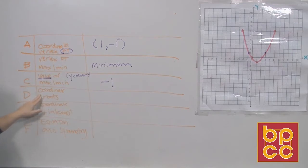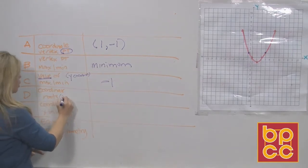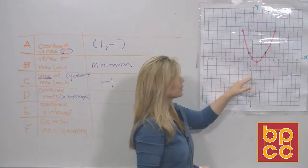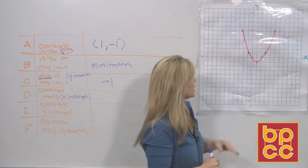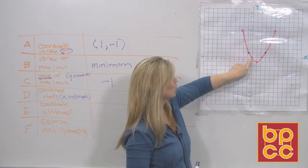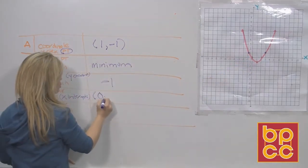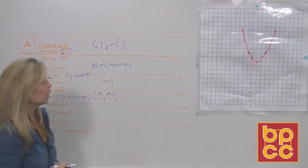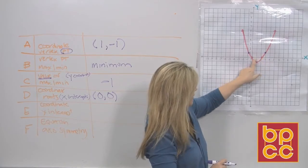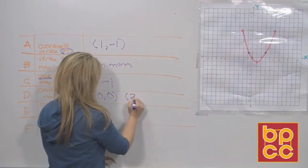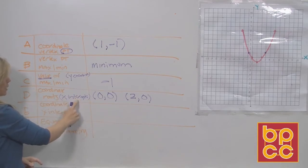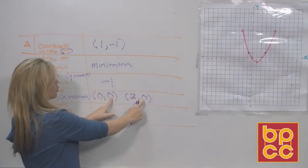They want the coordinates of the roots — roots is a fancy word for x-intercepts. Does this parabola touch the x-axis? It does — it touches here at the origin, so that root is at (0, 0). But there's also an x-intercept here, where the parabola touches the x-axis again, and that's at (2, 0). If you touch the x-axis, your y value will be zero.